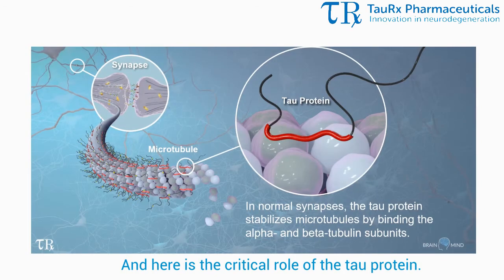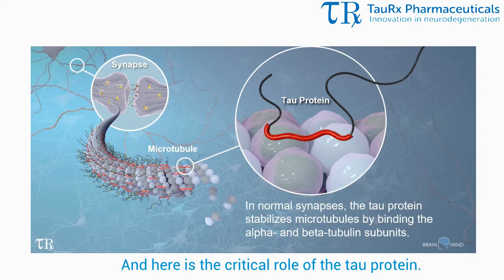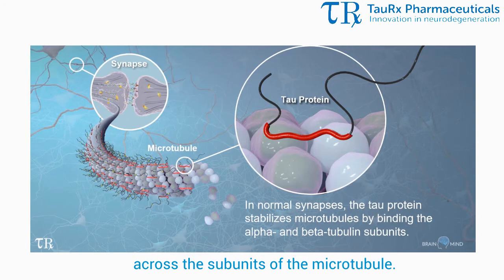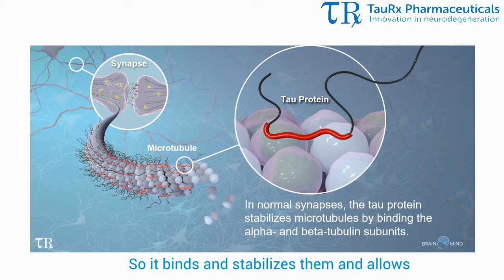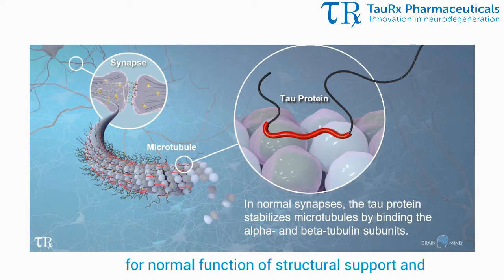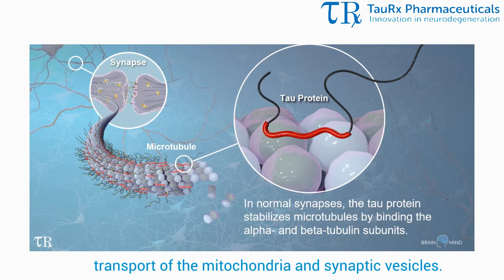Here is the critical role of the tau protein. Tau is a protein which sits across the subunits of the microtubule, so it binds and stabilizes them and allows for normal function of structural support and transport of the mitochondria and synaptic vesicles.